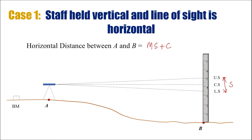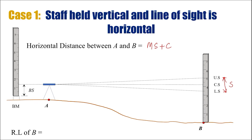As far as the reduced level of point B is concerned, we first need to know the reduced level of any point — that is the benchmark. At the benchmark we take the back sight reading first. Then we calculate the reduced level of the axis of the instrument by adding the reduced level of the benchmark with the back sight reading. From there, subtracting the distance h — which is the central stadia reading at point B — gives us the reduced level at point B.